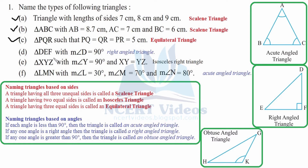Part d: Triangle DEF with measure of angle D equal to 90 degrees. If one of the angles is 90 degrees, it is called a right angled triangle. Therefore it is a right angled triangle. If any one of the angles is a right angle, the triangle is called a right angled triangle.